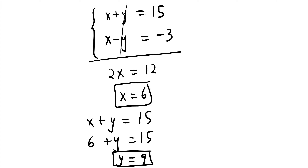This is what this whole section is about: learning how to multiply matrices, when we're allowed to multiply, and how to apply it. We applied it here in a system of equations context — it doesn't have to be just 2×2; it could be 3×3 or 4×4. You multiply the matrices on the left side, equate them with the right side, and solve for the variables.